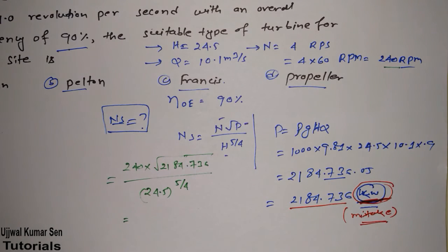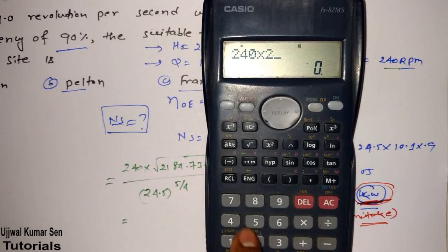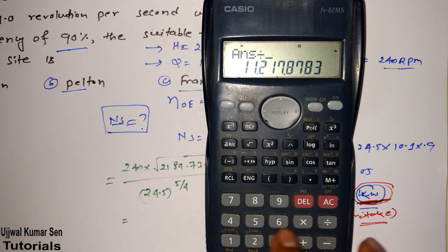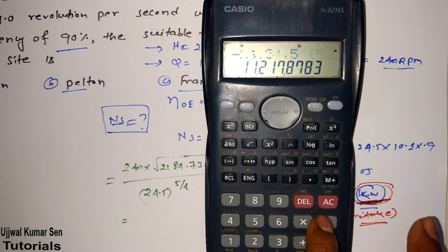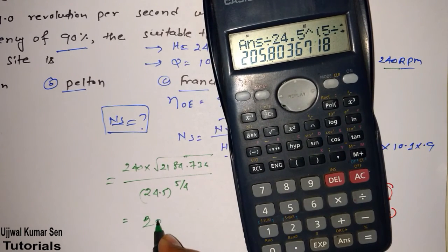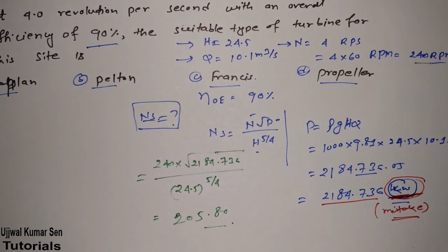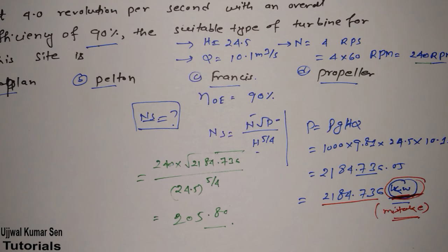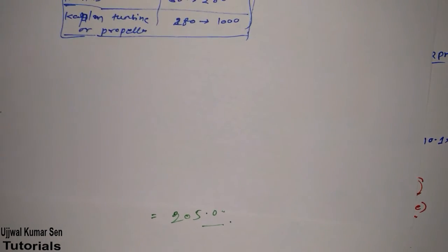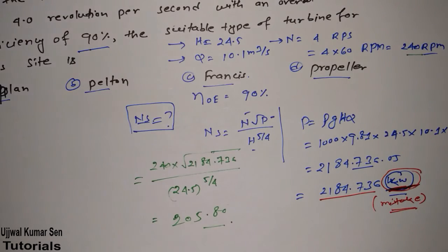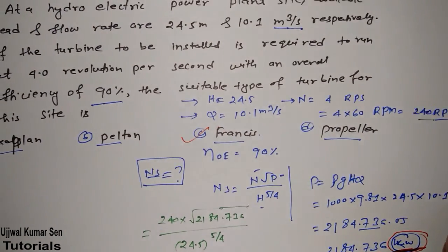Now we calculate Ns: N = 240, P = 2184.736 kW, H = 24.5, and the formula is Ns = N × √P / H^(5/4). Using a calculator: 240 × √2184.736 divided by 24.5^(5/4) gives approximately 205. Specific speed is dimensionless. A value of 205 falls within the Francis turbine range, so the answer is Francis turbine — option C.